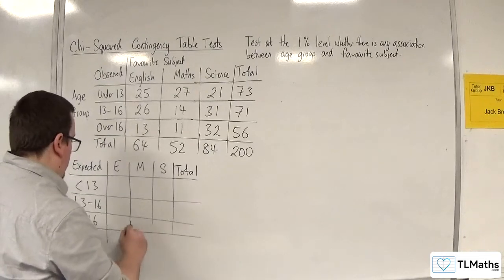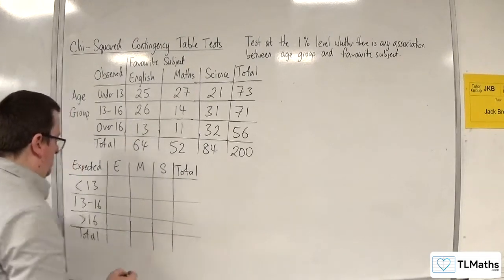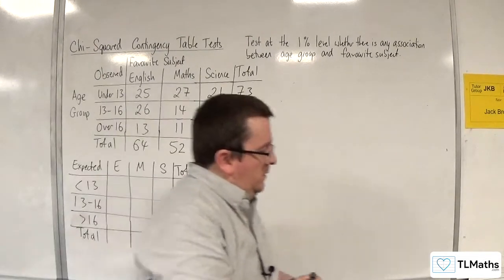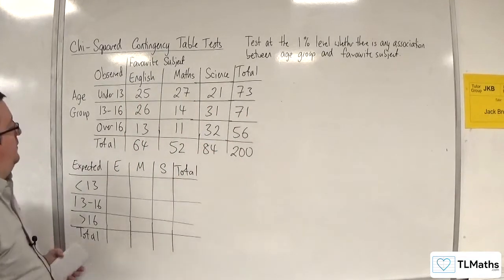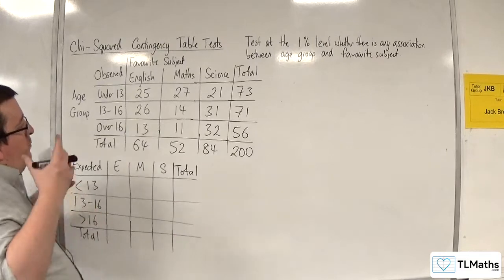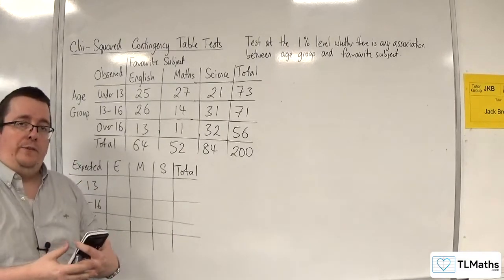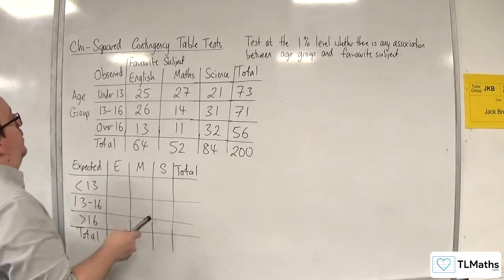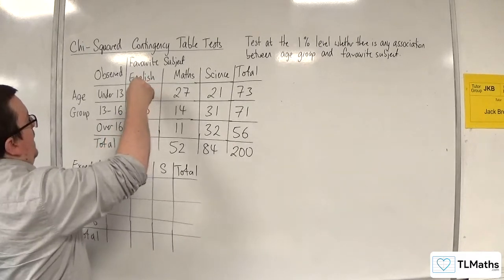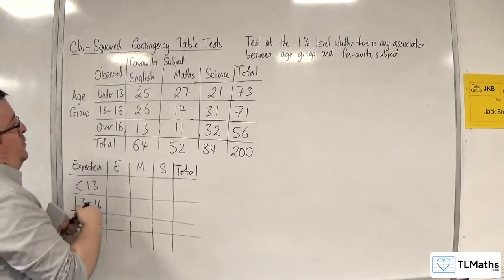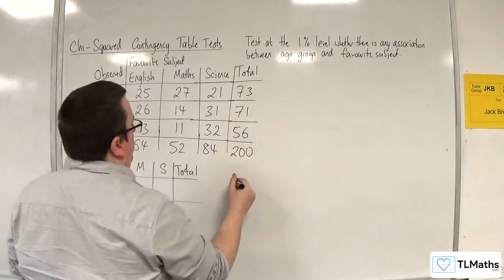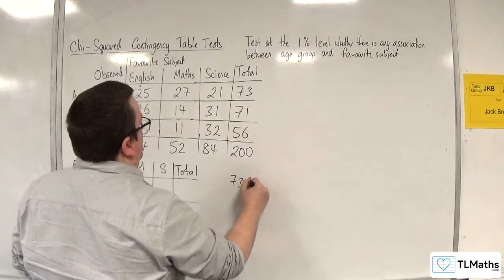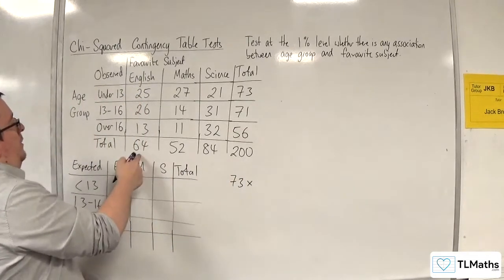Okay, it's good to double check that your values are correct at this stage. So how do we calculate these values for the expected frequencies? Well, what we do is we're assuming that the two events are independent. So we're going to get the corresponding value for English for under 13s by doing the row total, which is 73, times by the column total, which is 64.